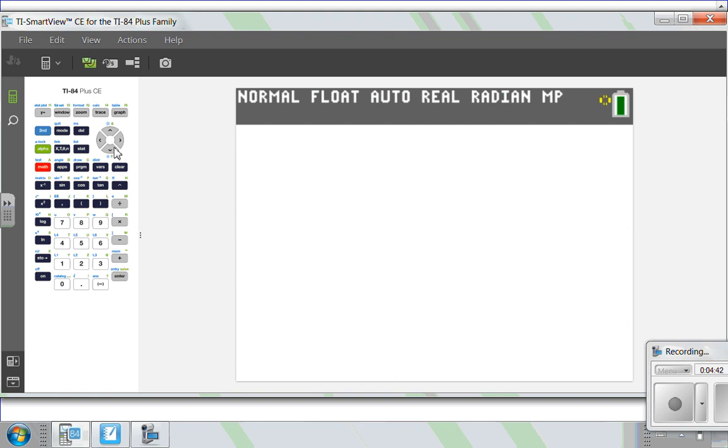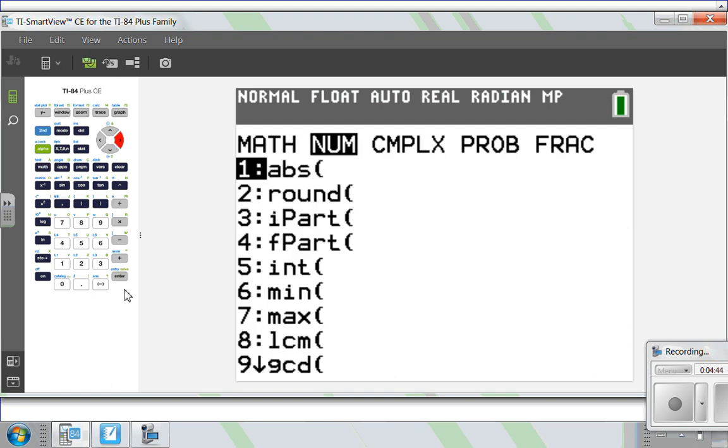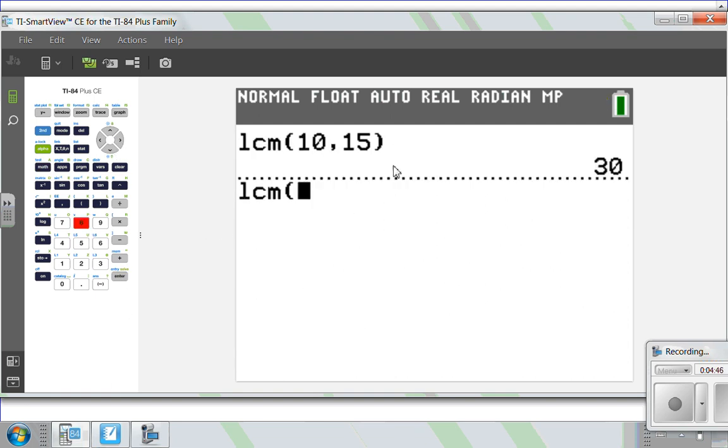So I'm going to do the LCM of 10 and 15, and then take that number with 20. So let's do it again. Math, number, LCM is 8. So the LCM of 10, 15, and 20 is the LCM of 10 and 15, which is 30, and then comma, we put that with 20, and then boom, we get 60. So great trick.